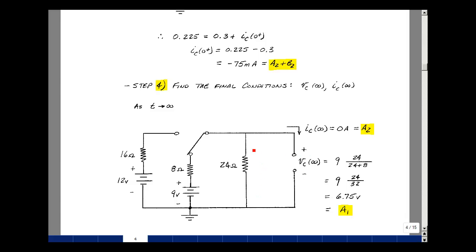This is the voltage across the 24 ohm resistor, so it's going to be 24 ohms voltage divided with 8 times 9. That turns out to be 6.75, and that's going to be a1 plus b1 times e to the minus infinity, which is just equal to a1.